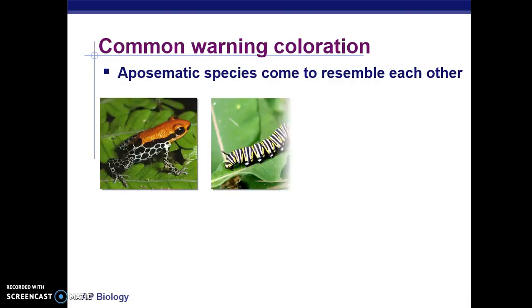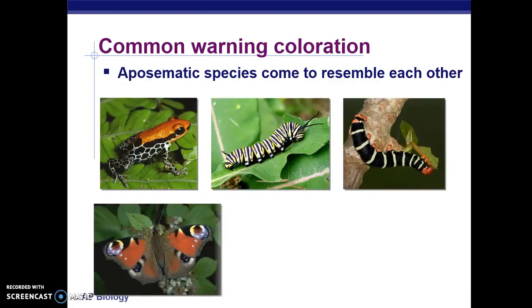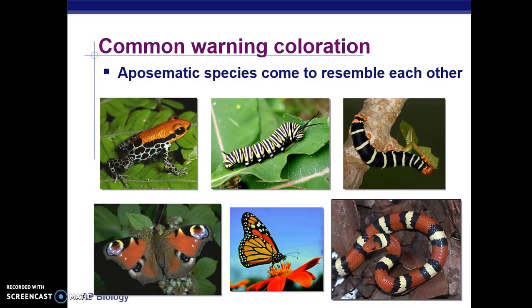Another adaptation that prey have developed is warning coloration. Organisms that are poisonous tend to be colorful, which signals to predators that they shouldn't eat them. Some organisms have developed the ability to avoid eating colorful organisms because they know they are poisonous. Examples here include a poisonous frog, poisonous caterpillars, and poisonous snakes — warning coloration telling the predator: I'm poisonous, don't eat me.